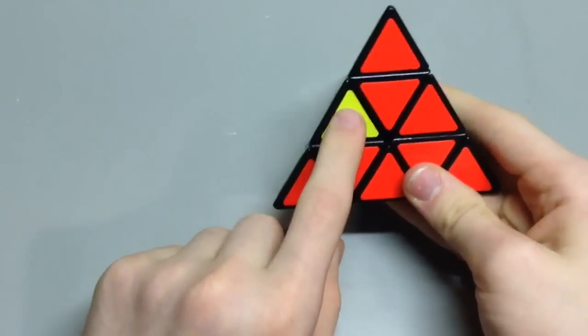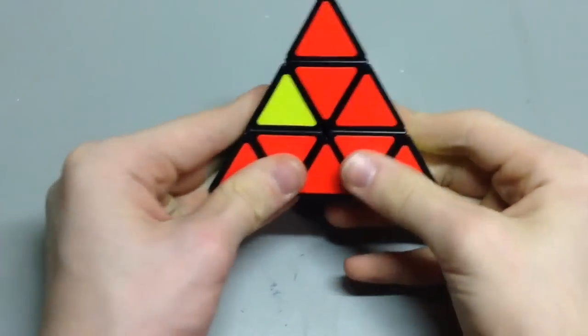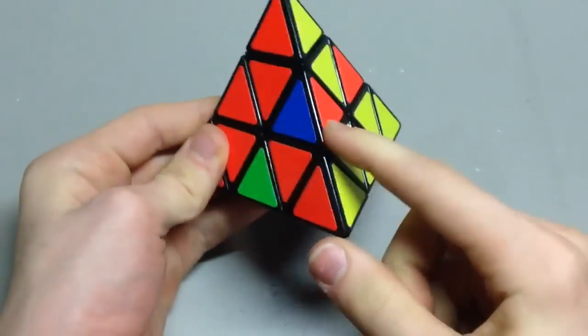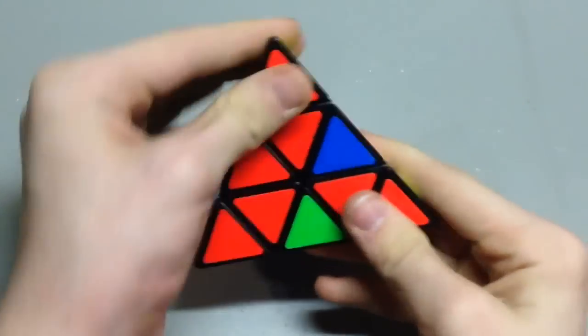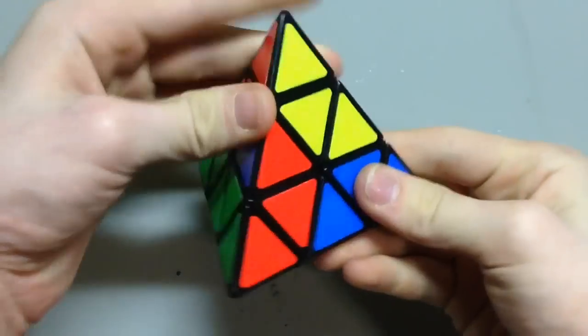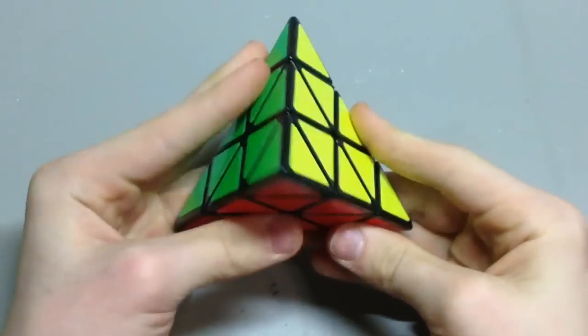If the one that doesn't match is on the left, then you start with the left and you go L R' L' R. And we took that piece out, so we turn it, match it up, and then insert it. And that solved it.